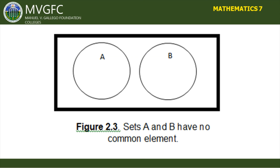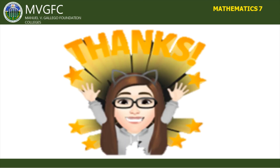Similarly, for the complement of Set B, the shaded part is outside circle B but inside the rectangle. A special case shown in the figure is disjoint sets — sets A and B with no common element — represented by two non-overlapping circles inside the rectangle.